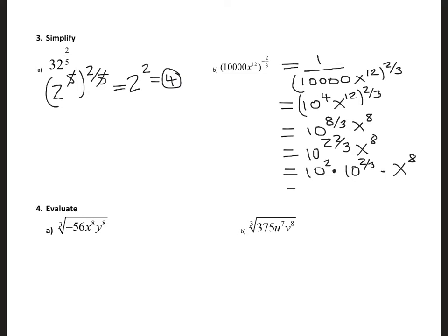Since 10 squared is 100, I can simplify that to 100. The 10 to power two-thirds I cannot simplify further, so that remains as 10 to power 2 over 3, and then x to power 8. Another way I could write this answer is in radical form: 100 times x to power 8 times the cube root of 10 squared.